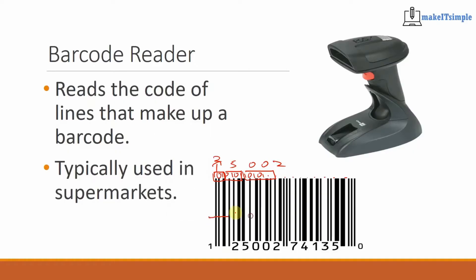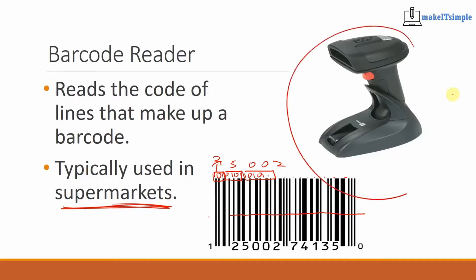What happens is a laser passes through very quickly reading one, zero, one, zero all the way down to the end, and then it goes beep — typically seen in a supermarket. The point is this is an input device; the barcode is input into a computer.